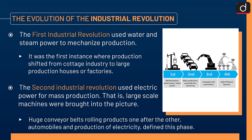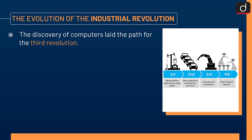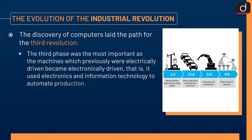Huge conveyor belts rolling products one after the other, automobiles, and production of electricity defined this phase. The discovery of computers laid the path for the third revolution. The third phase was the most important development, as machines which previously were electrically driven became electronically driven — that is, it used electronics and information technology to automate production.